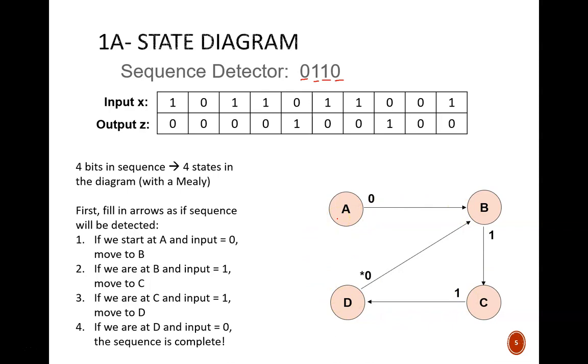That's because this is the overlap 0. It completes the first sequence, thus the star, and it is a successful first step for the second sequence, thus skipping state A.